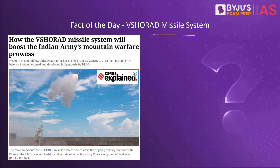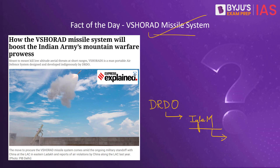Moving on to the fact of the day: the Very Short Range Air Defence (VSHORAD) missile system. The Defence Acquisition Council has accorded acceptance of necessity to this missile system, which has been designed and developed by DRDO. Background: the Indian Army has been using the IGLA-M since the 1980s, but this system is no longer well-suited for evolving modern threats. In 2018, Russia was believed to supply the IGLA-S missile system to the Indian Army, but this deal remains pending and under review by the Ministry of Defence to reduce arms imports and promote Make in India.